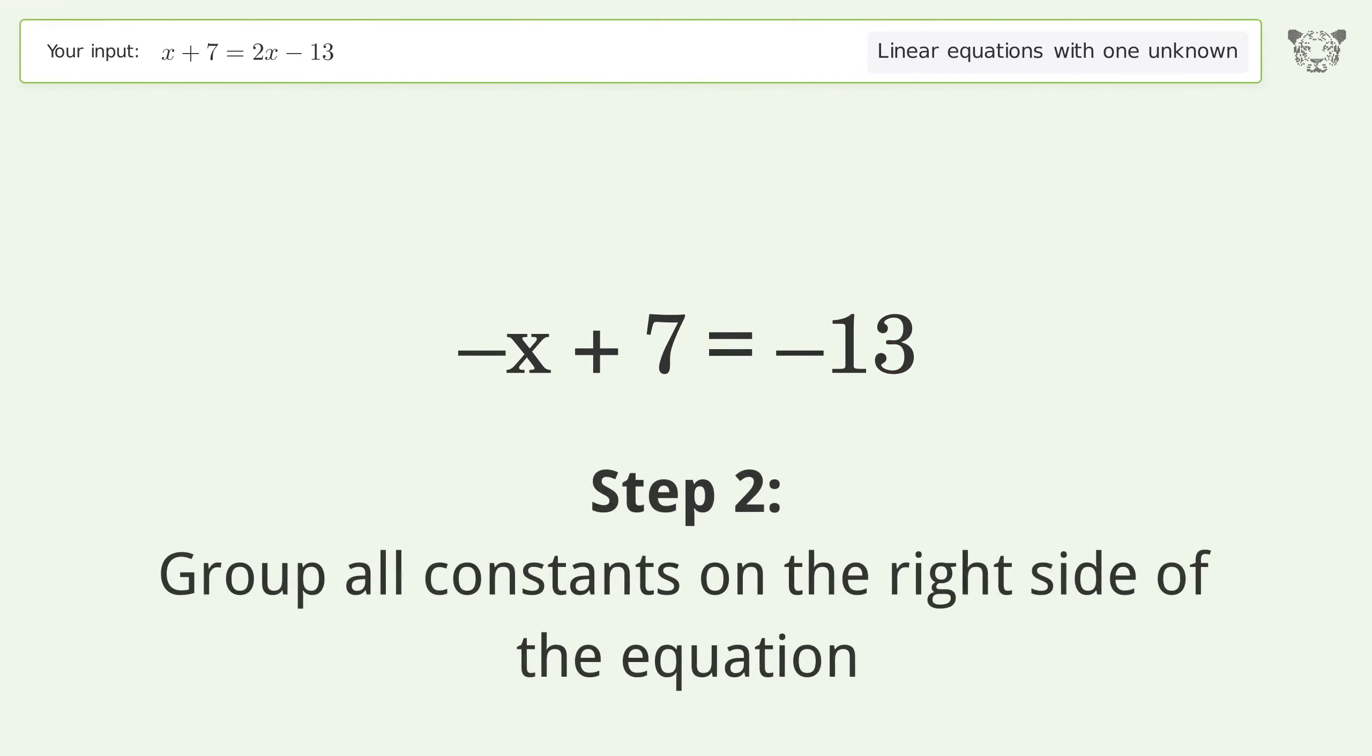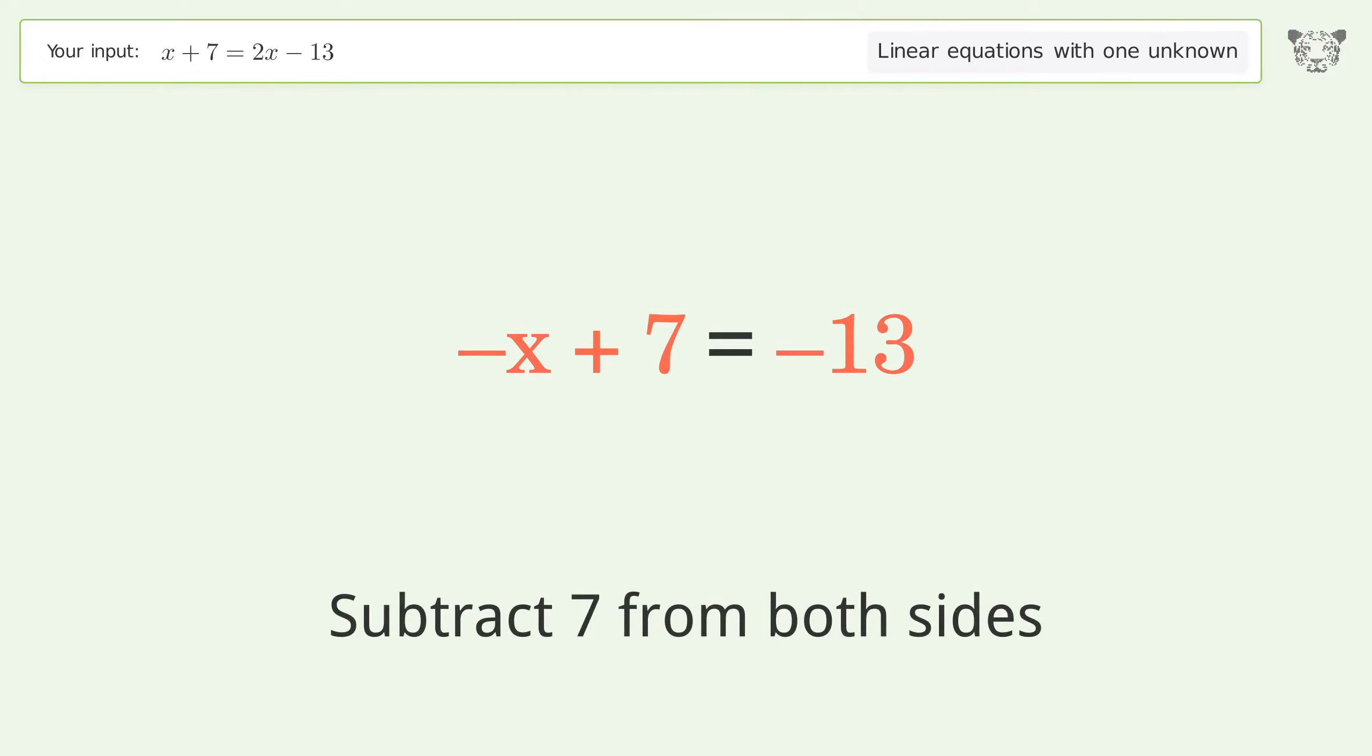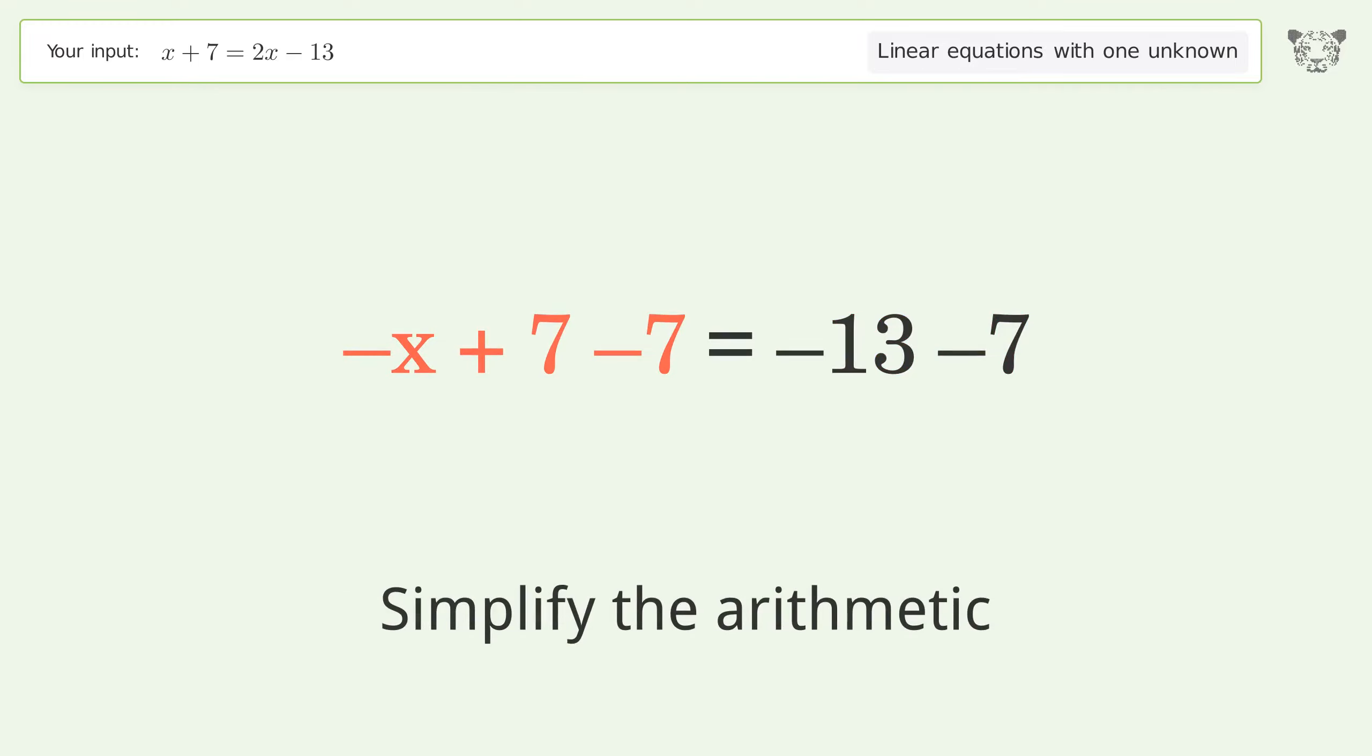Group all constants on the right side of the equation. Subtract 7 from both sides. Simplify the arithmetic.